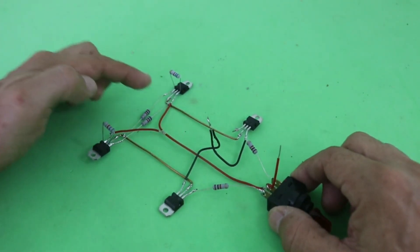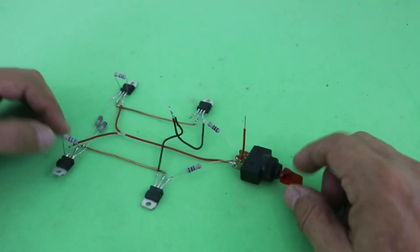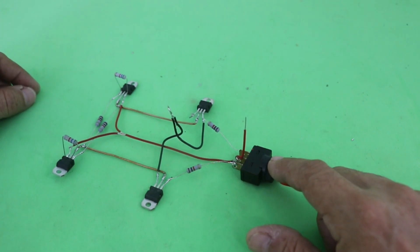You just need four transistors, six resistors and of course a switch, single pole double throw.